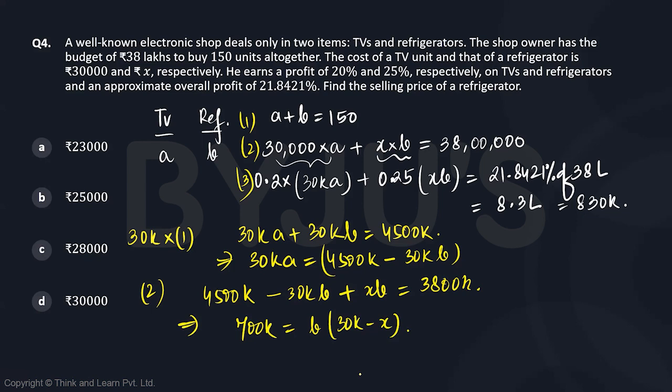If we use the third equation with what we just derived, it will be very calculative. So let's use the options instead. The selling price of a refrigerator is 1.25 times X. Let's start with the easiest option.